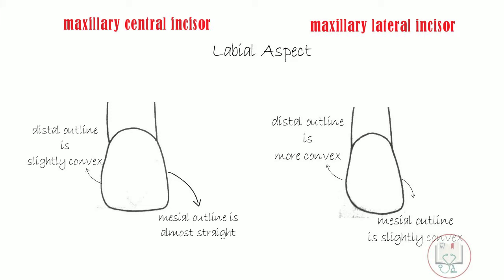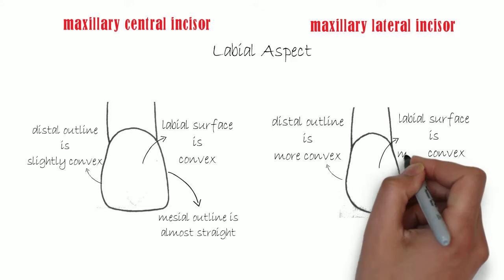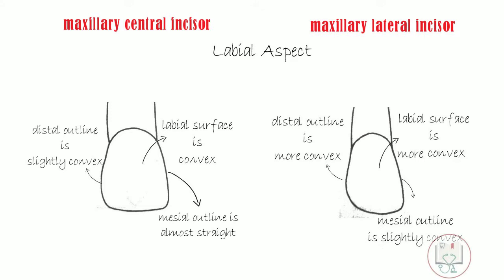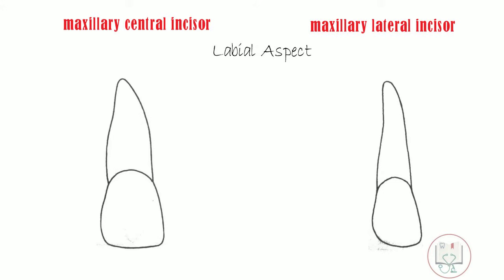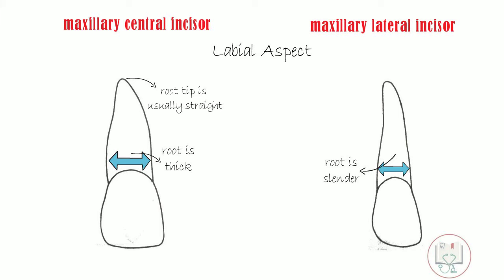The labial surface of the crown is convex in both teeth, but it is more convex in the lateral incisor. Both incisors have a single conical root, but the mesiodistal diameter of the lateral incisor is less, due to which it appears more slender. Moreover, the tip or apex of the root very commonly shows a distal tilt in the lateral incisor.